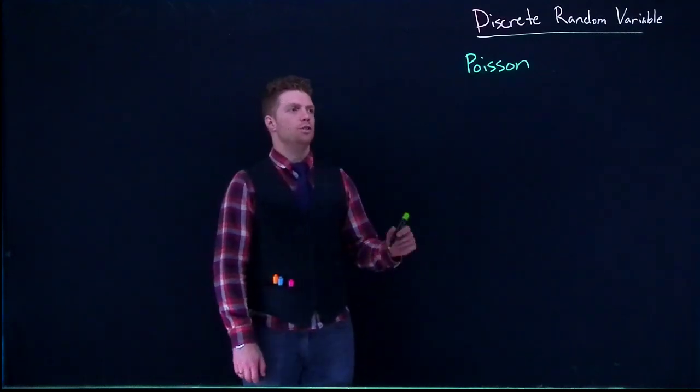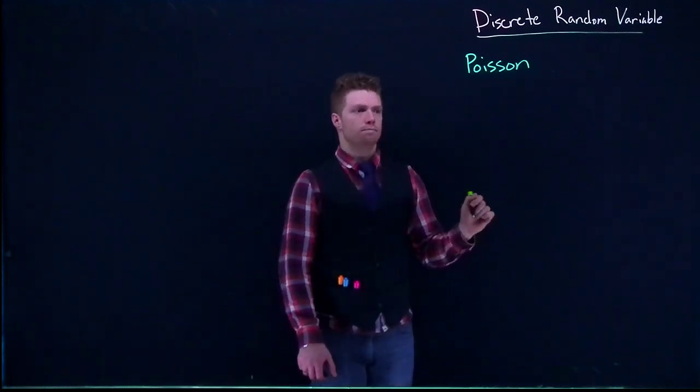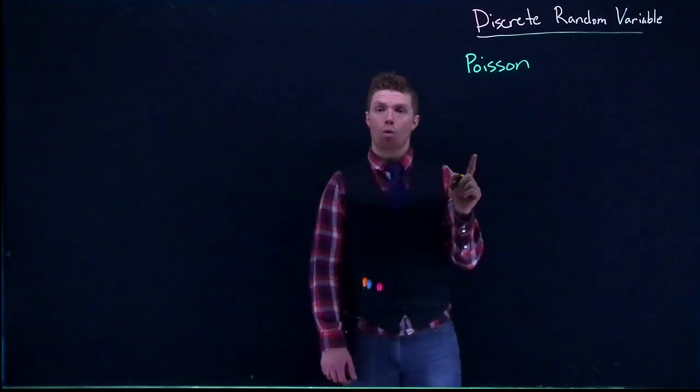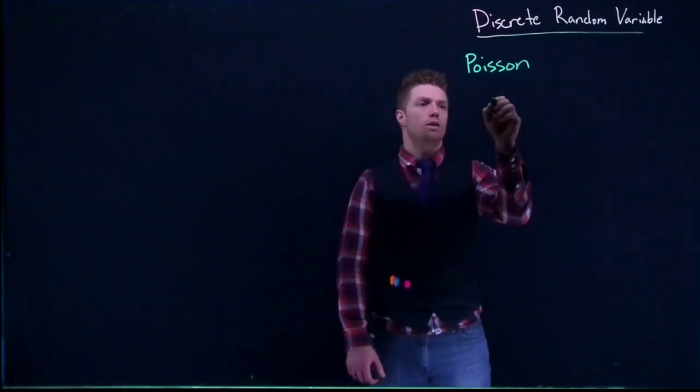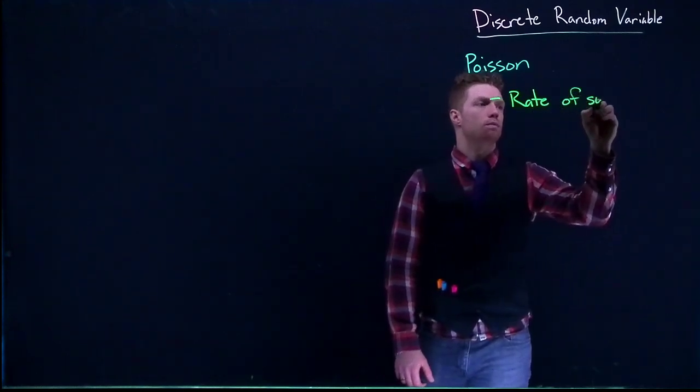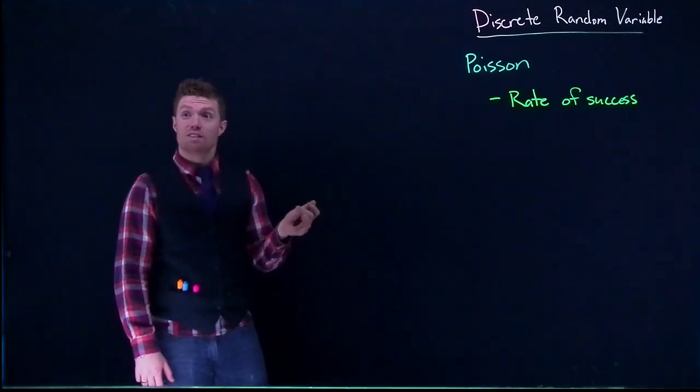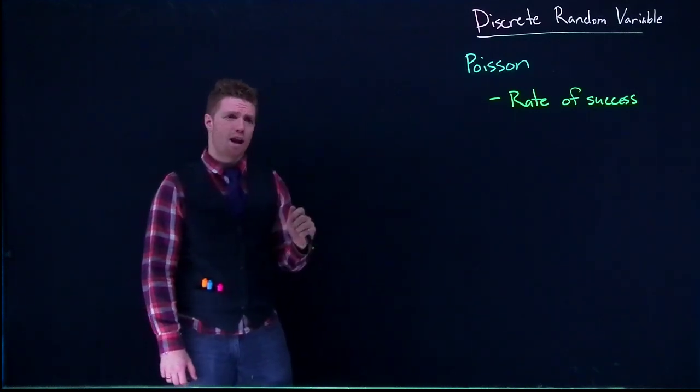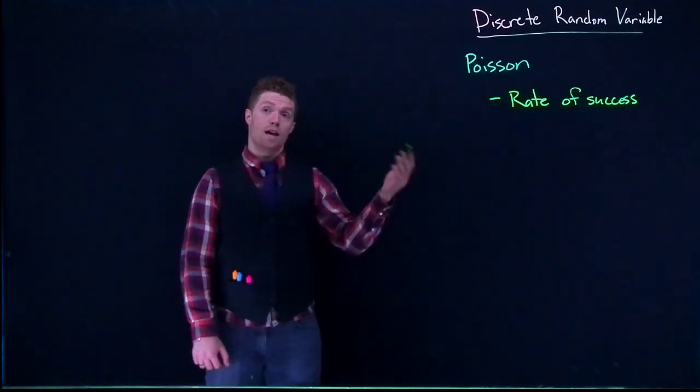Another discrete random variable distribution that we are going to be talking about is called the Poisson distribution. It's got a few requirements as well. The Poisson is interesting because we actually only need one piece of information to figure out our PMF and the expected value. We need what is called a rate of success. So a rate of success would be something like, let's say you own a fast food restaurant and per hour 20 people come through your drive-thru, or 20 people per hour. That would be a rate of success.